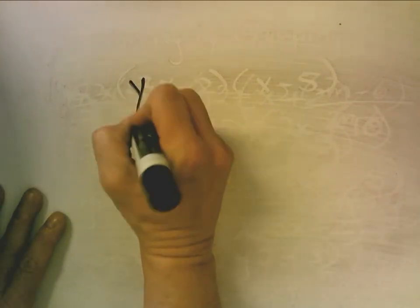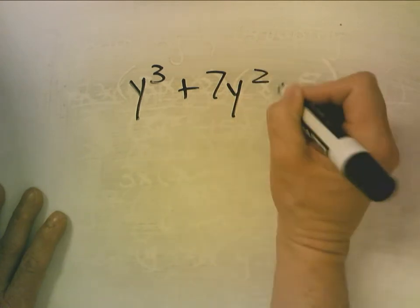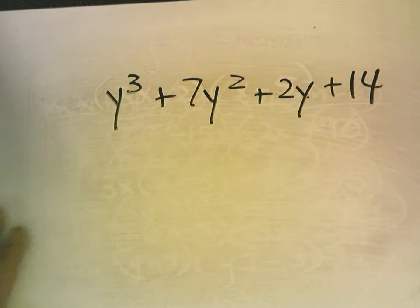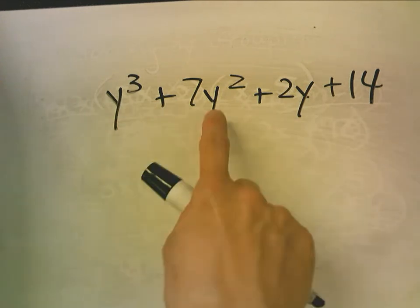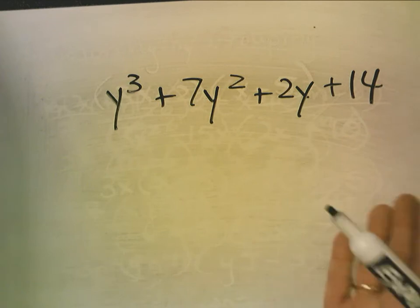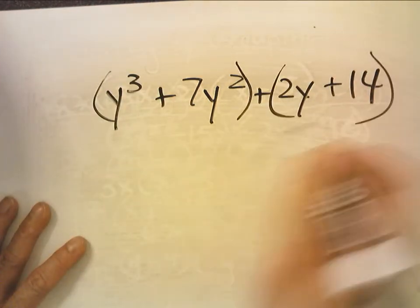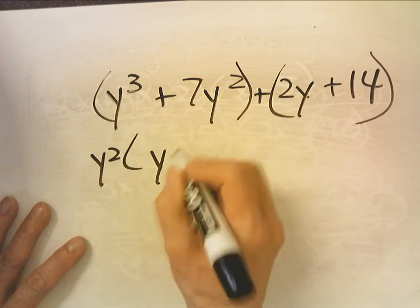So we're going to just practice factoring by grouping. So here we have y cubed plus 7y squared plus 2y plus 14. So I want you to copy that down. And we're going to try to factor this by grouping. Now, if you're told to factor this, the first thing you're going to notice is there's four terms, but not one common factor. So then you say, okay, let me try factoring by grouping. I'm going to take y squared out of here. I get y plus 7.